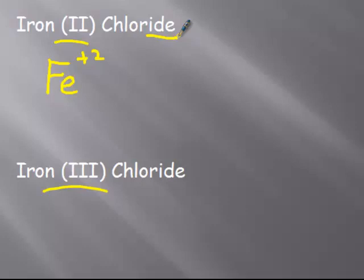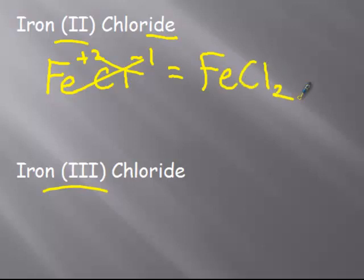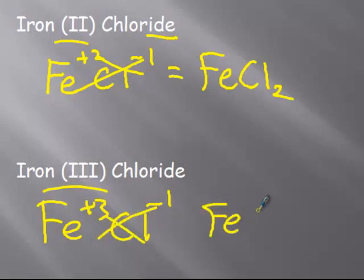Chloride. It's ionic and it's binary. Minus one. Cross the charges. And I get FeCl2. In this case, with a three and a minus one. Cross the charges. FeCl3.